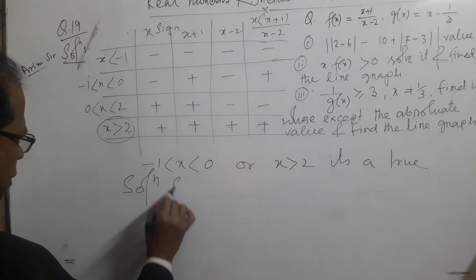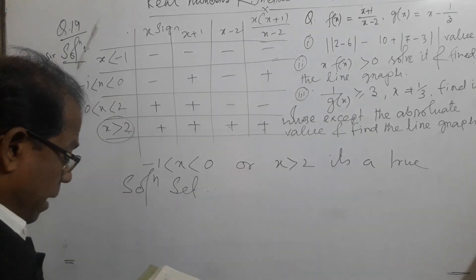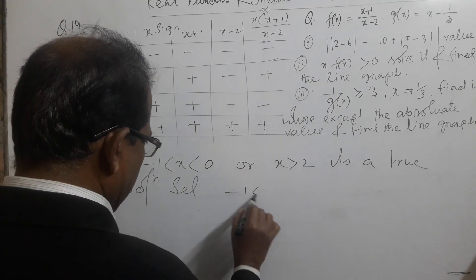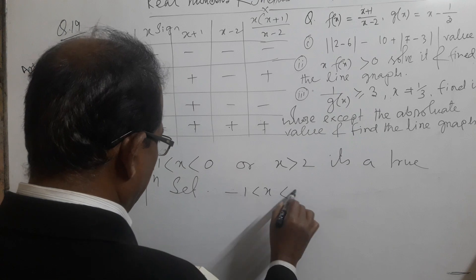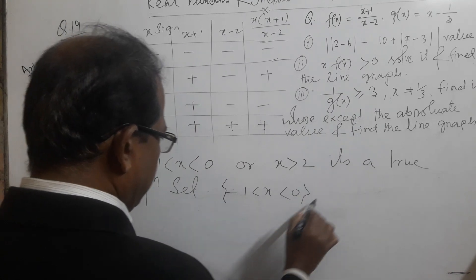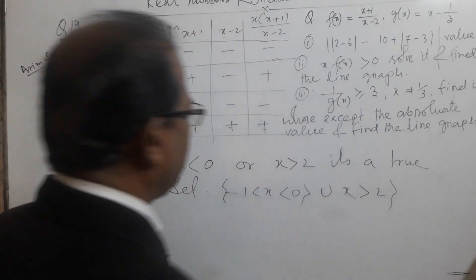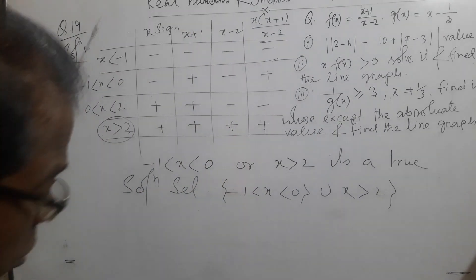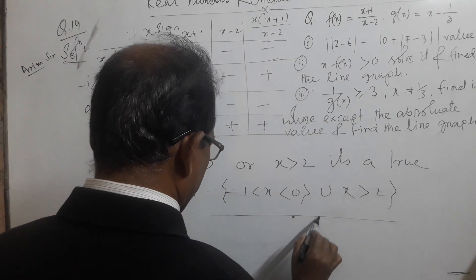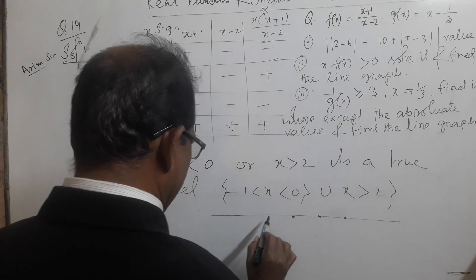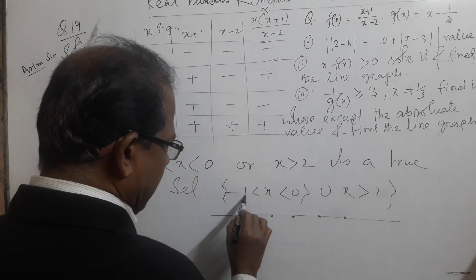The solution set is: minus 1 less than x less than 0, union x greater than 2. That is the complete solution set. For the line graph, we plot the number line with points 0, 1, 2, minus 1, minus 2. The solution regions are from minus 1 to 0 and from 2 onwards.